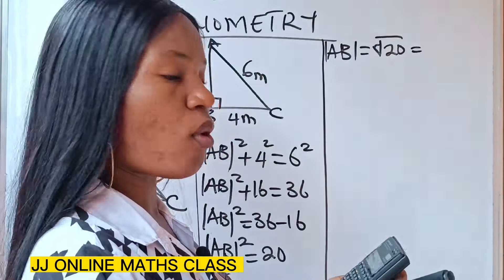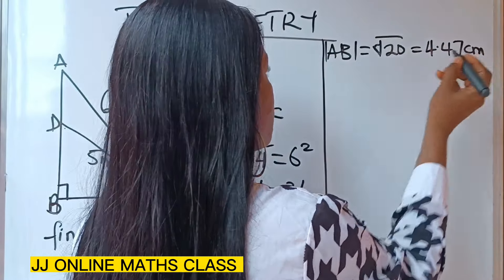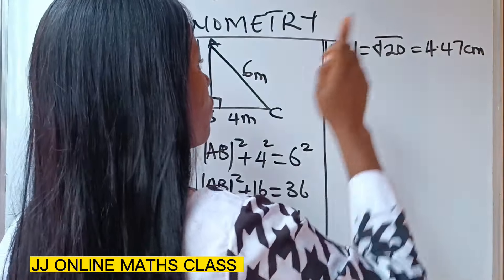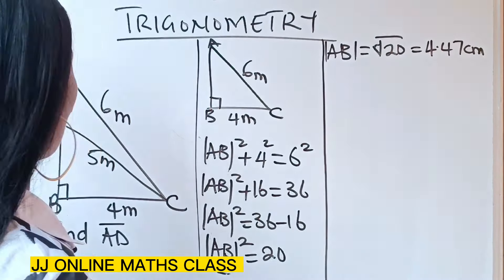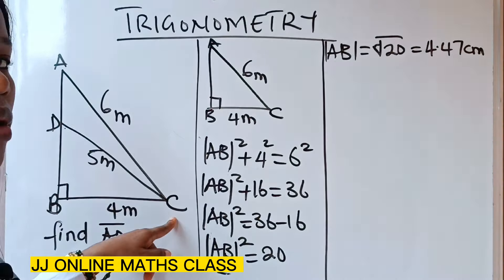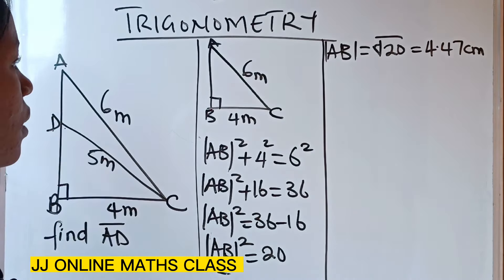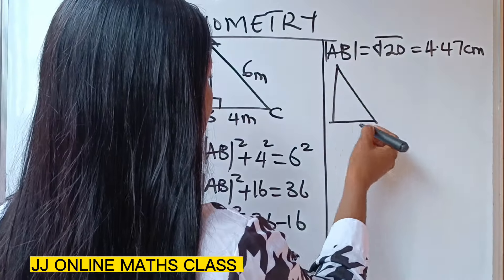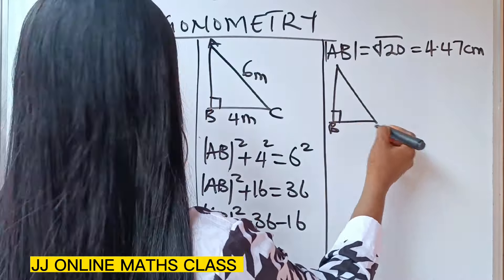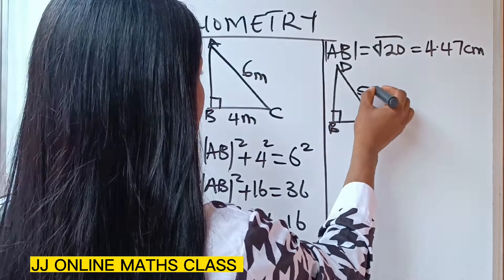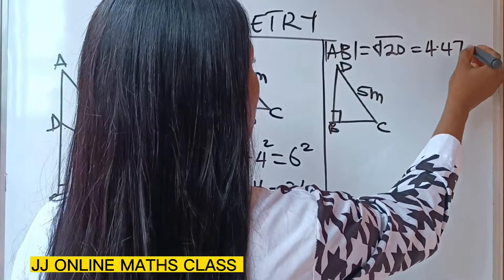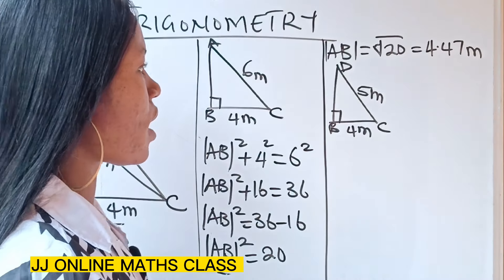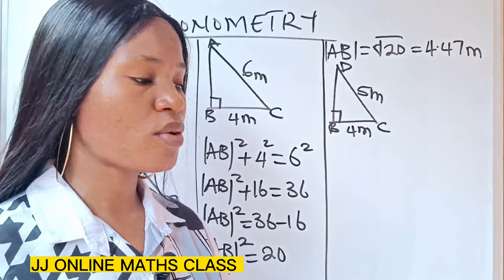So line AB is 4.47 meters. Now we are going to concentrate on triangle BCD. If we draw it, this is B with the right angle, this is C, and this is D — five meters here and four meters here. I can now get line BD using the Pythagorean theorem as well.